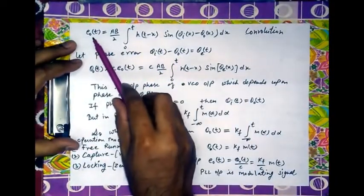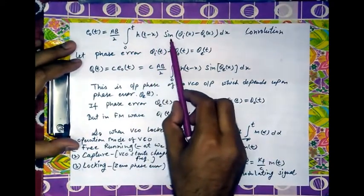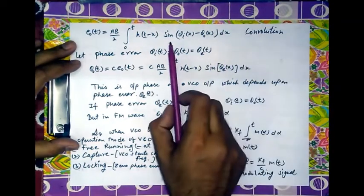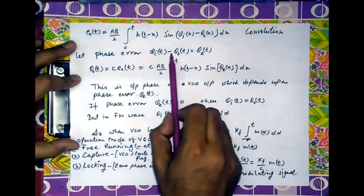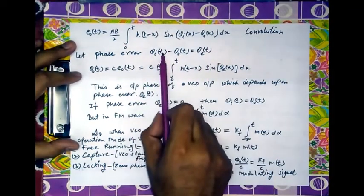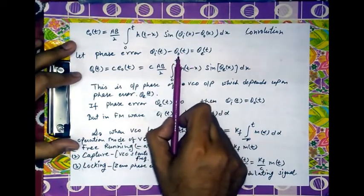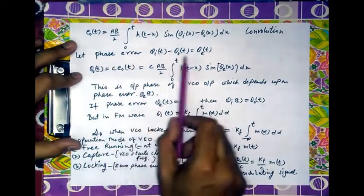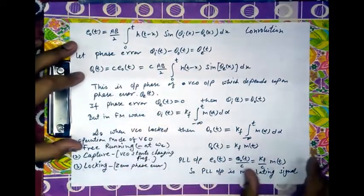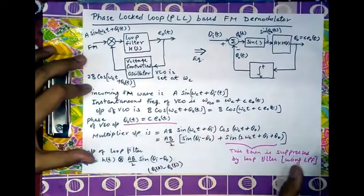Using the convolution formula, e_0(t) = (AB/2)·∫₀ᵗ h(t−x)·sin(θ_i(x) − θ_0(x)) dx. We now define θ_e(t) = θ_i(t) − θ_0(t) as the phase error, that is, the difference between the instantaneous phase of the FM wave and the instantaneous phase of the VCO. We also recall that θ_0(t) = c·e_0(t).